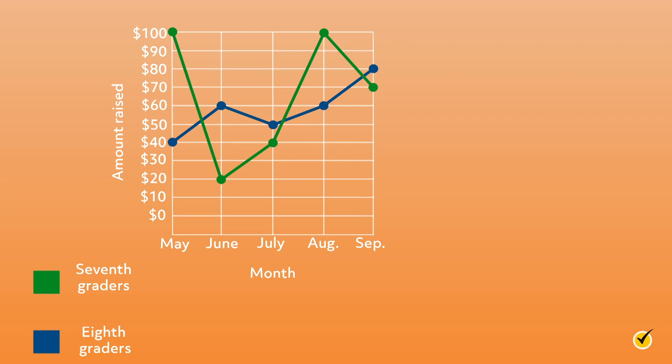Let's take a look at a line graph that shows two sets of data. This graph shows how much money was raised in a school fundraiser each month. The horizontal x-axis shows the independent variable, which is month, and the vertical y-axis shows the dependent variable, which is amount raised. Each marker shows the data point for how much money was raised in each month shown. The two data sets are graphed in two different colors, blue and green. By reading the key beneath the graph, we see that green represents money raised by 7th grade students and blue represents money raised by 8th grade students. Pause the video after each question is asked, then look at the graph and see if you can answer it yourself. When you're ready, resume and check your work.